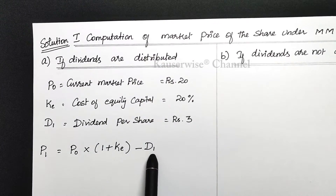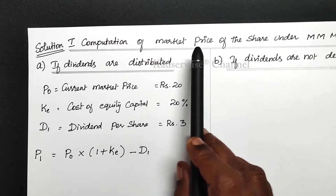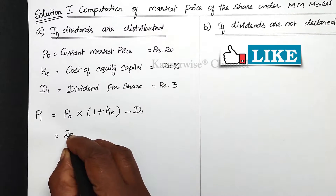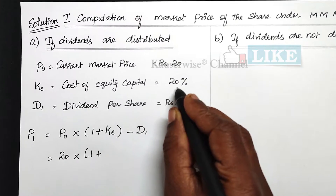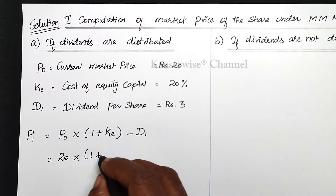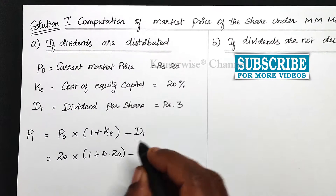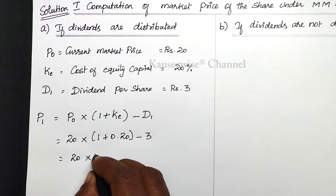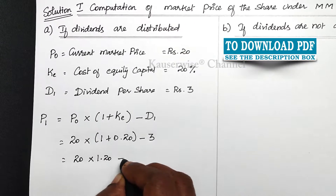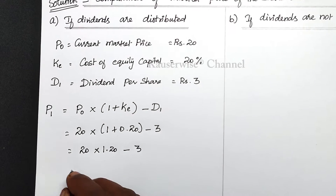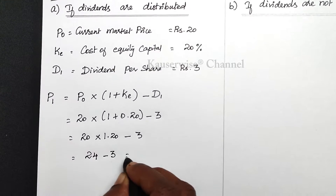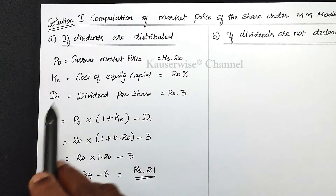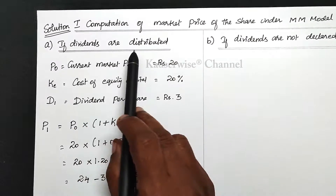We substitute the values in the formula to find the market price of the share at the end of the year. 20 into 1 plus 0.20 gives 20 into 1.20, which equals 24, minus D1 of rupees 3 gives rupees 21. So the market price per share at the end of the year under the MM approach, if dividends are distributed, is rupees 21.